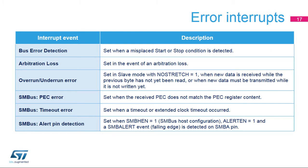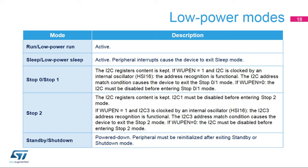Several error flags can be generated. A bus error detection flag is set when a misplaced start or stop condition is detected. The arbitration loss flag is set in the event of an arbitration loss. An overrun or underrun error flag is set in slave mode with clock stretching disabled when an overrun or underrun error is detected. In SMBus mode, a PEC error flag is set when the received PEC does not match the calculated PEC register content. A timeout error flag is set when a timeout or extended clock timeout is detected. An alert pin detection flag is set in the SMBus host configuration when alert is enabled and a falling edge is detected on the SMBA pin.